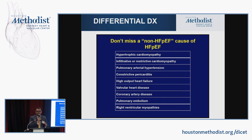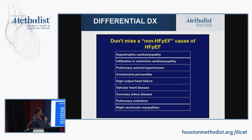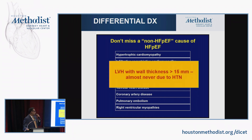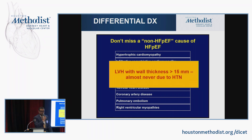Remember that heart failure with preserved ejection fraction has a normal EF, but a normal EF can also be seen in constrictive pericarditis, hypertrophic cardiomyopathy, and infiltrative cardiomyopathy. An important point when reviewing ECHOs: look at left ventricular wall thickness. Hypertension almost never causes LVH greater than 15 millimeters. If wall thickness is 17–18 mm, it is almost never due to hypertensive cardiomyopathy — you must look for infiltrative cardiomyopathy, and if asymmetric, hypertrophic cardiomyopathy.